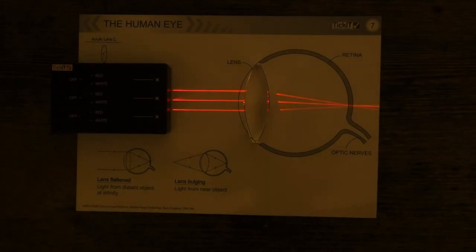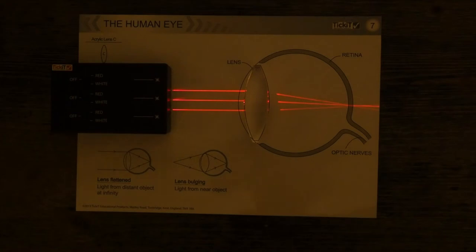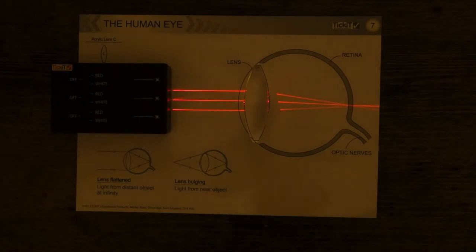Now as you can see, the function of the lens is to converge the light onto the retina at a point. So for a normal lens and a normal eye, this image would be in focus.